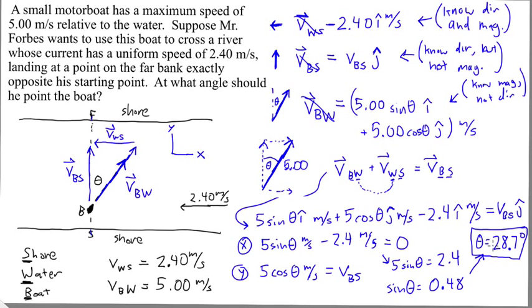And this is the angle Mr. Forbes has to point the boat at, so he's got to point it 28.7 degrees towards upstream from directly across, if you wanted to actually describe it.